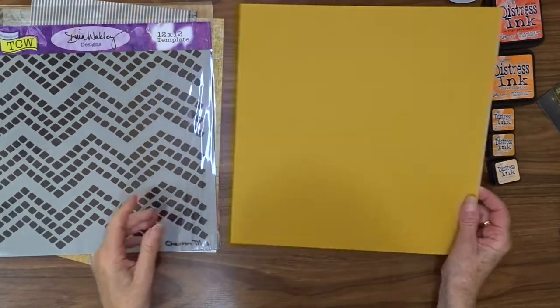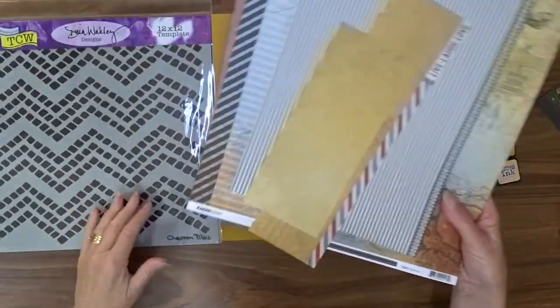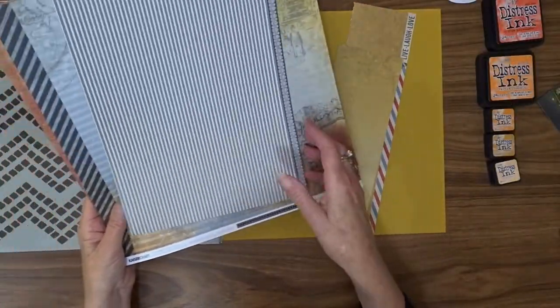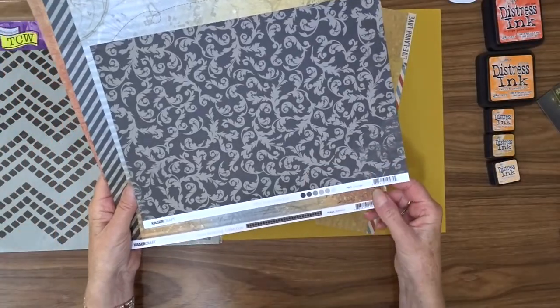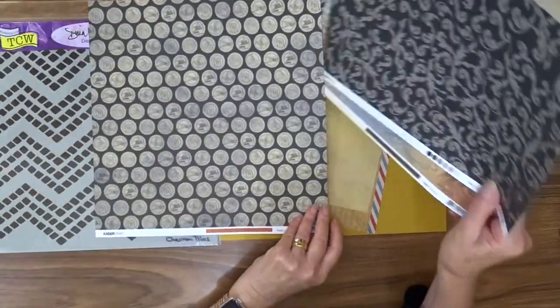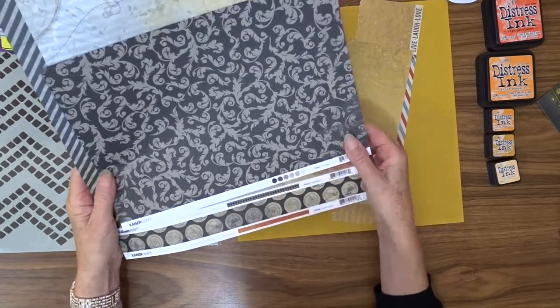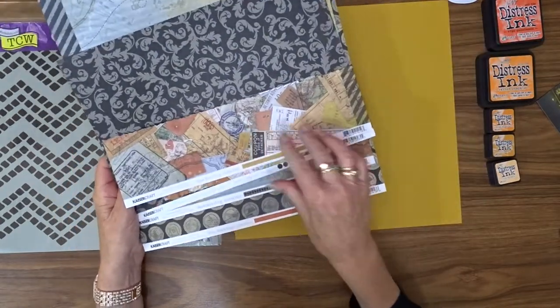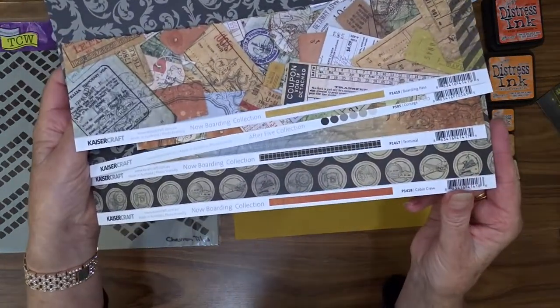The mood board is all about autumn colors, so I've chosen a mustardy colored cardstock for the background. The pattern papers I'm going to use are all from Kaiser Crafts—they're very old ones. Some are from Now Boarding and one is from After Five.